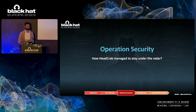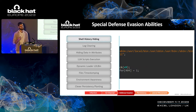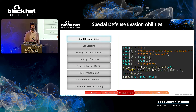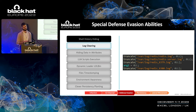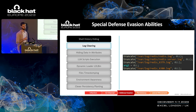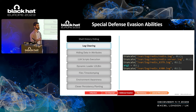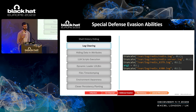Let's dig a little deeper into the operation security and see what unique capabilities HeadCrab has that other malware don't. The first is shell history hiding. Whenever HeadCrab executes a command, it accompanies it with the environment variable HISTFILE equals /dev/null. This makes it so the commands HeadCrab executes are not saved into the history file and cannot be investigated later by the defender. The second ability is log clearing. Instead of deleting the logs, HeadCrab truncates them to size zero, effectively clearing the files without triggering an alert like other malware would when they delete files.